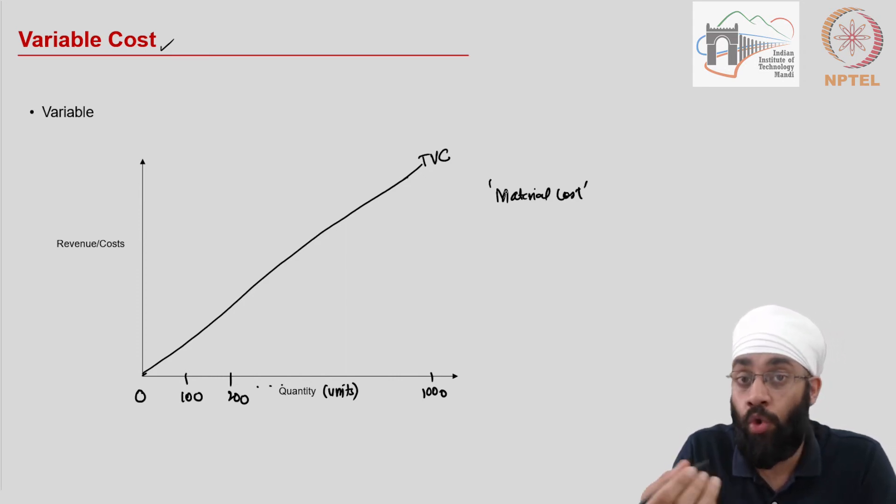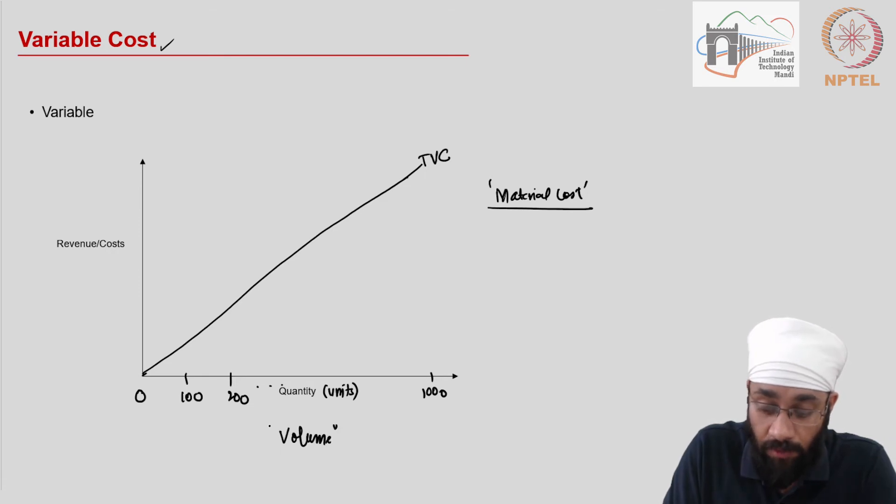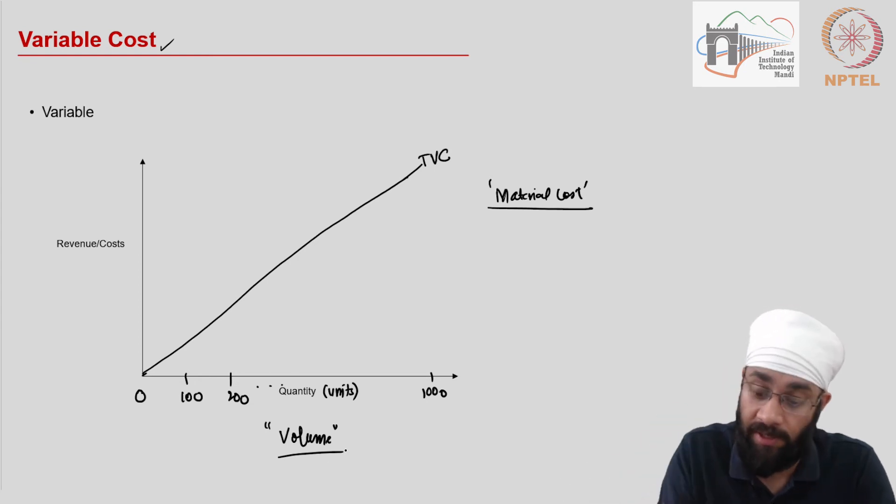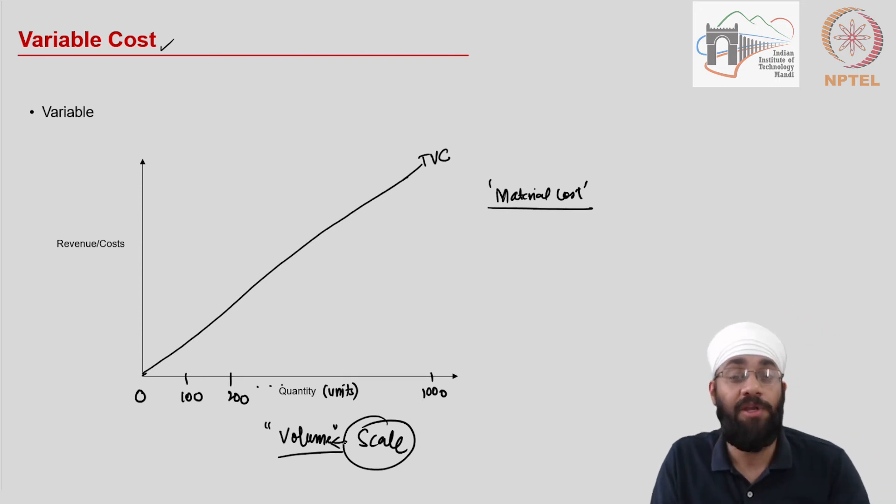The cost of the material that goes into one unit. So for example, to produce every one unit of pen, you would require a certain amount of, certain quantity of plastic to be used in the production process. So if you want to produce more, you need more material. If you don't produce, you don't need the material. So that is a variable cost. Again, what is the basis? The basis is the volume, the volume of production. How many units? At what scale do you want to operate? So scale is another word for the volume.